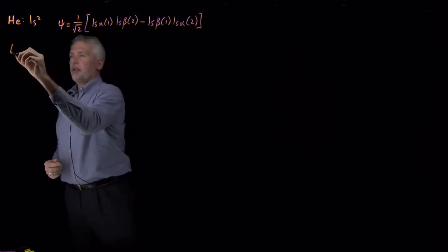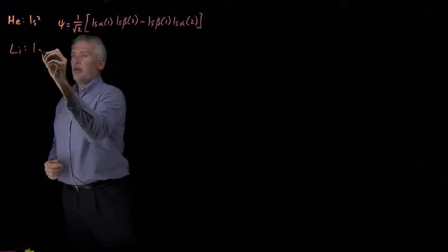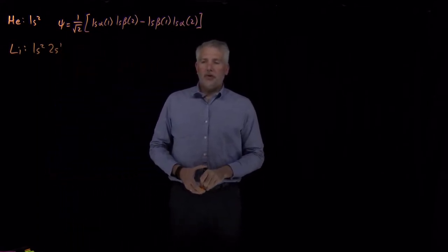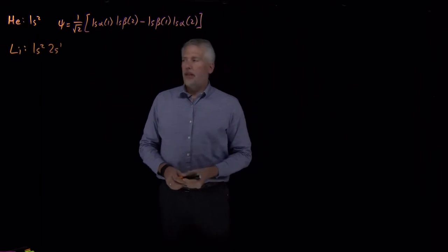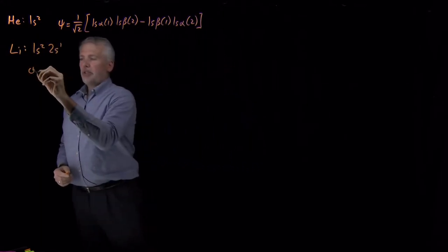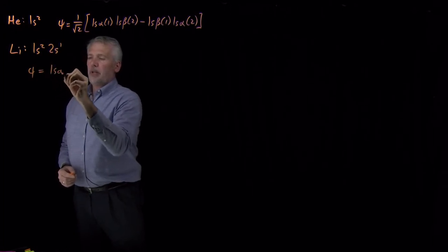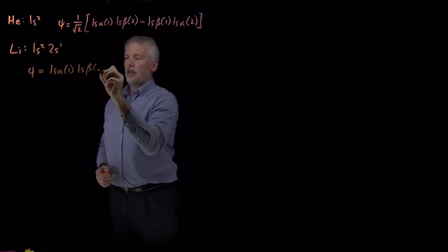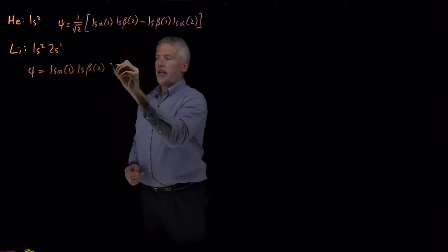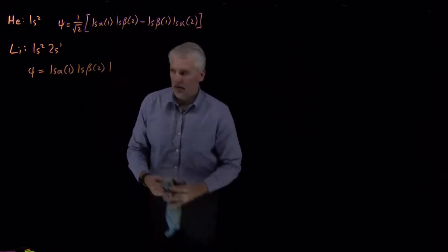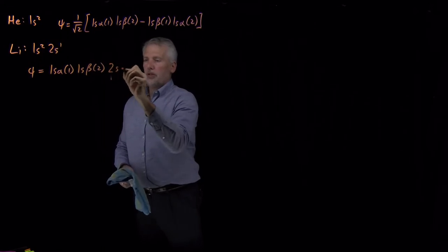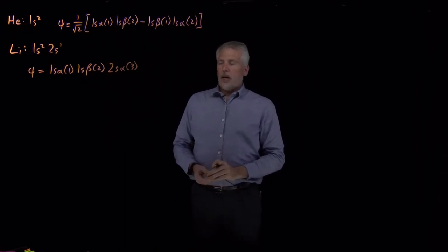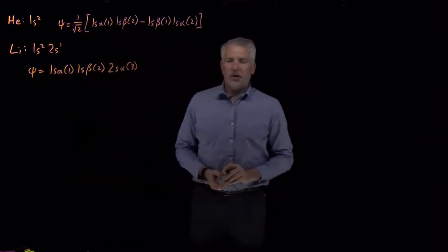We're now in a position to understand what we mean when we say the electron configuration for an atom like lithium is 1s2, 2s1. That would naively seem to suggest the wave function looks like a spin up electron in the 1s orbital, a spin down electron in the 1s orbital, and a spin up electron in the 2s orbital for electron number 3. That would be fine, except it's not anti-symmetrized and it's not normalized.